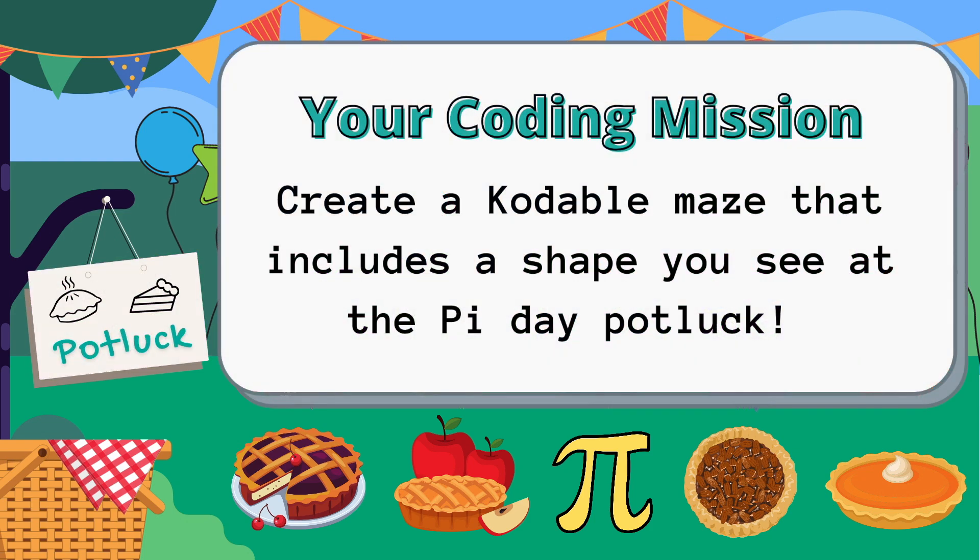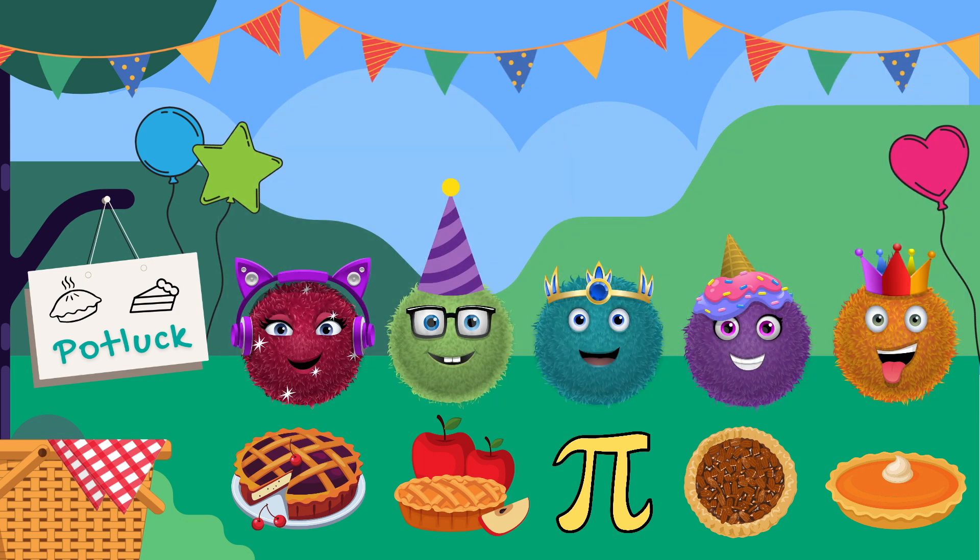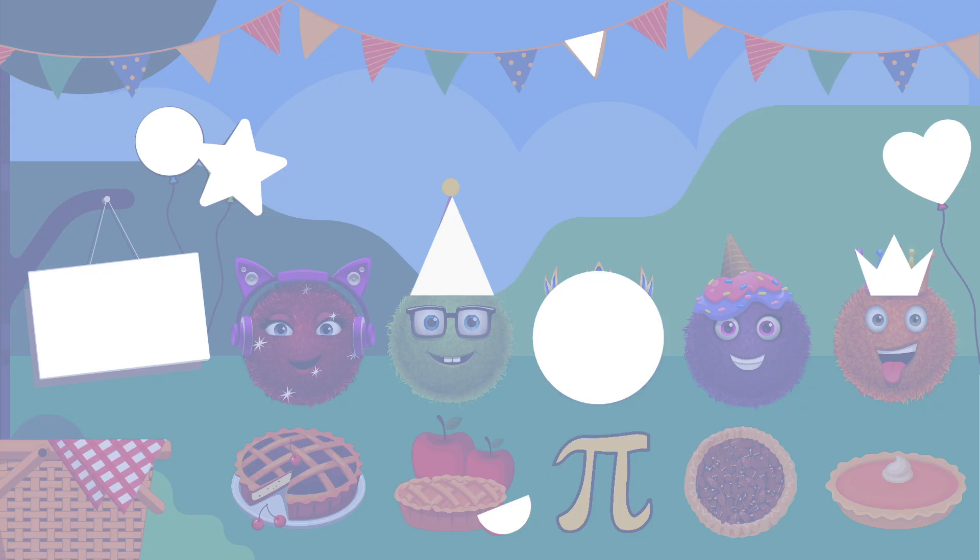Your coding mission is to create a Codable maze that includes a shape you see at the Pi Day potluck. Step one is to choose a shape. Take a look at the picture of the Pi Day party. What shapes do you notice? Here are some examples. I like the triangle shape of Simon's party hat, so I'll pick that.